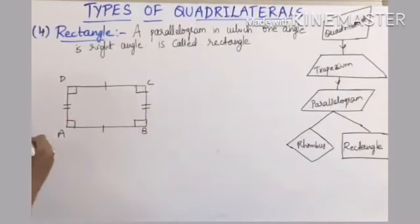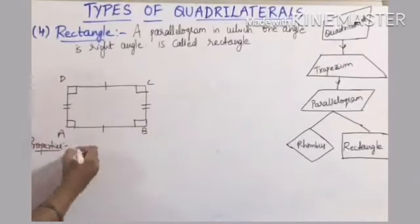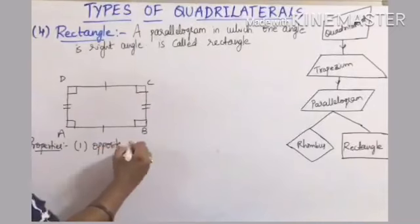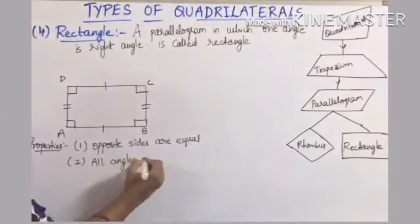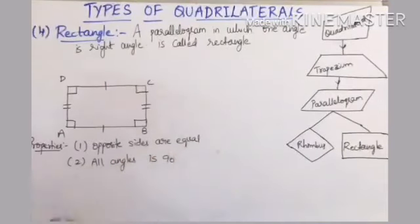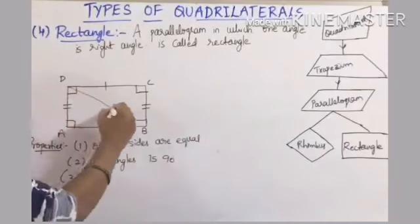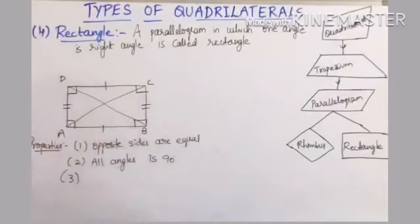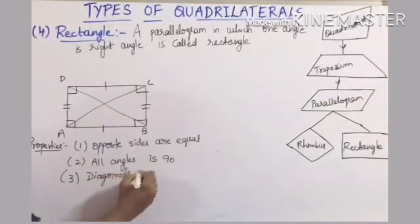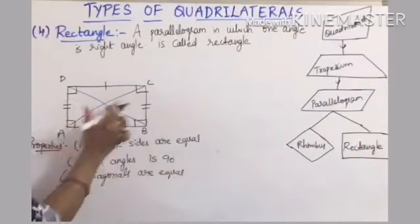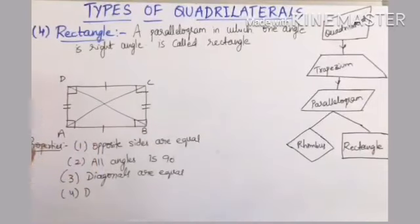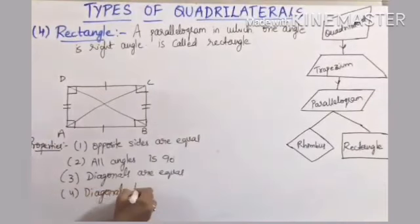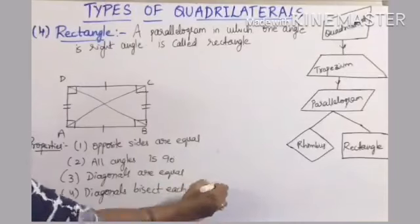Properties of a rectangle: opposite sides are equal; all angles are 90 degrees; the diagonals are equal — if diagonal AC is 10 cm, then diagonal BD is also 10 cm; and the diagonals bisect each other.